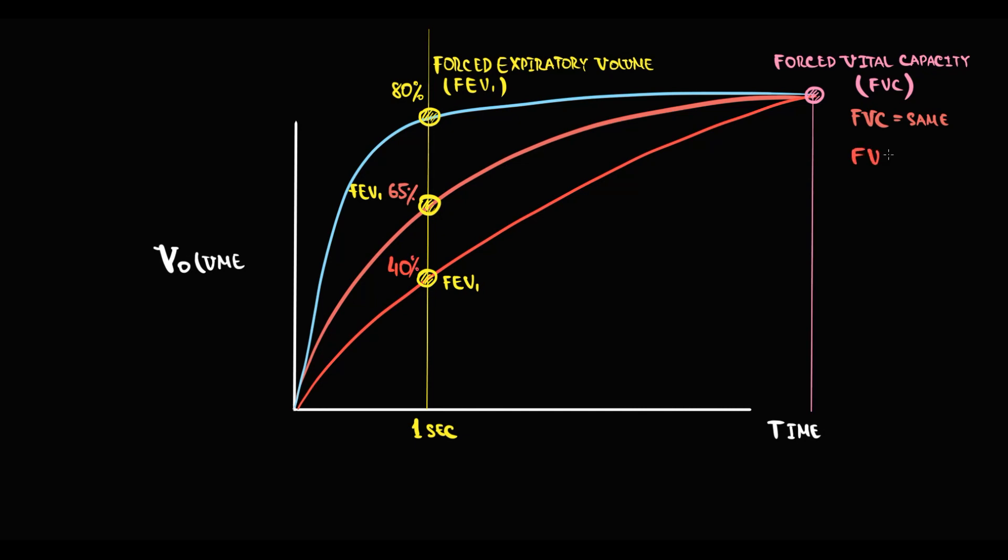In emphysema, we determine the severity of the alveolar injury by decreasing forced expiratory volume in one second. Also, because FEV1 decreases and forced vital capacity remains practically the same, the ratio of FEV1 to FVC will decrease. It's the second value that we most commonly use.